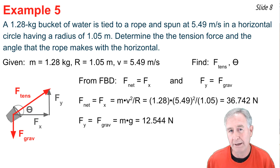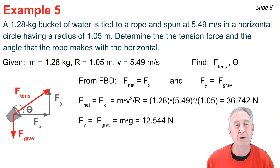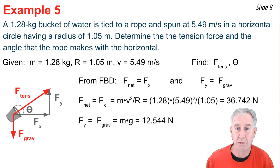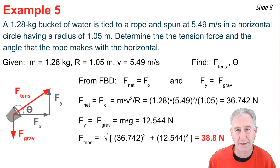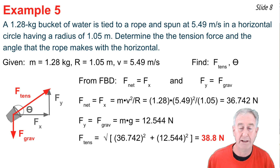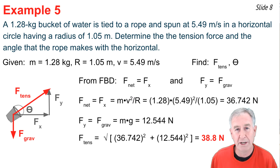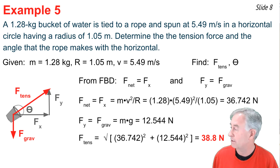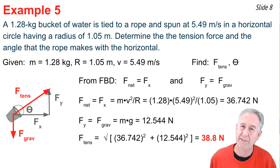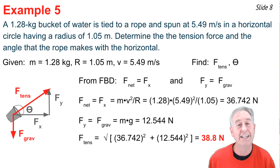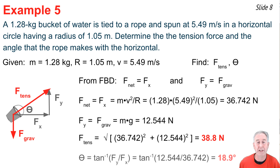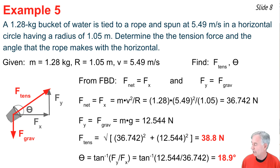fx and fy are sides of a right triangle with F_tension as the hypotenuse, so using the Pythagorean theorem: fx² + fy² = F_tension², and I can solve for F_tension. Then to find angle theta: the side opposite theta is fy and the side adjacent is fx, so tan(θ) = fy / fx, meaning θ = arctan(fy / fx). With the calculator set to degrees, theta comes out to be 18.9 degrees.